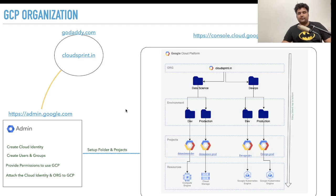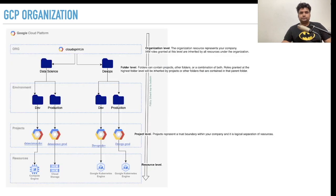The second part of the lab is all about setting up folders and projects, where we will learn how to set up an organization, how to create folders, how to divide them into environments, and how to create projects — that last layer which is resources. We will be discussing this in detail during the lab. Before we move to the next segment, let's understand how GCP org looks.